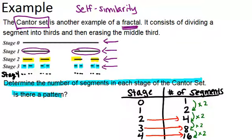Now each of our numbers of segments are all powers of 2. 1 is 2 to the 0, 2 is 2 to the 1, 4 is 2 squared, 8 is 2 to the 3rd.